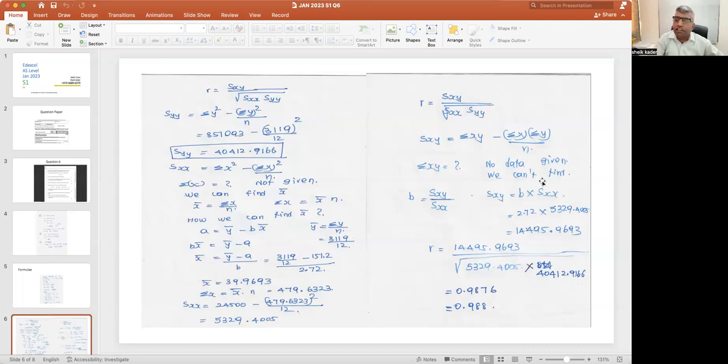What is the other formula to find b? b equals sxy over sxx, so sxy equals b times sxx: 2.72 times 5329.4005 gives 14,495.9693. If you substitute all these values: r equals sxy over square root of sxx times syy, you will get 0.9876 or 0.988. We have proved it.